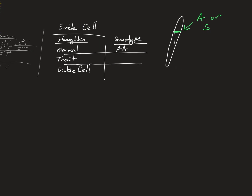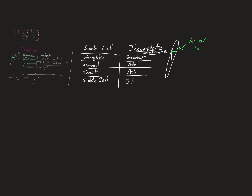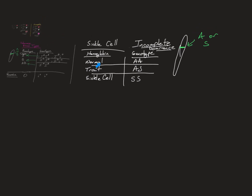Malaria exists in a lot of places including the Mediterranean, southern Italy, Sicily, and Greece — you'd have an advantage with the trait. AA is normal; SS is sickle cell. If you have the trait, AS — what is that? It's normal until low blood oxygen, and then it sickles. So it's not both at the same time — that would be incomplete dominance.